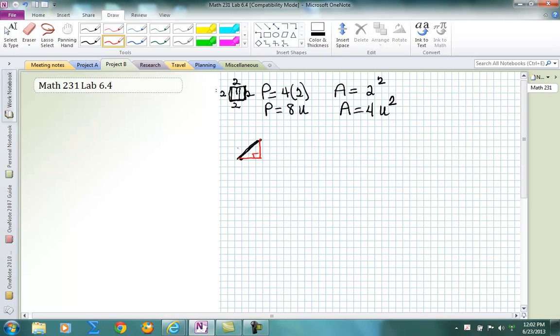And when you do that, you can use the Pythagorean theorem to find the length of the diagonal. Because we can calculate that the base would be 1, 2, 3, 4 and the height would be 1, 2, 3. And therefore we can set up the Pythagorean theorem as a squared plus b squared equals c squared. Or 4 squared plus 3 squared equals c squared. Or 16 plus 9 is c squared. 25 is c squared. Take the positive square root and we get 5 units to be the length of that diagonal.